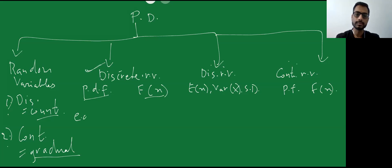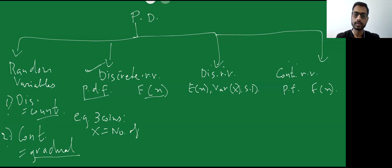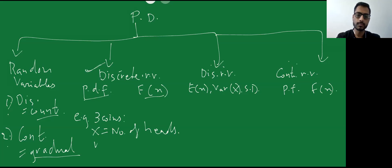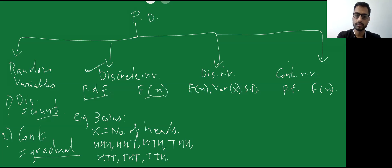Consider one example: three coins are tossed, and X is a random variable equal to the number of heads. The outputs when tossing 3 coins are: HHH, HHT, HTH, THH, HTT, THT, TTH, TTT — so 8 outputs are possible overall.